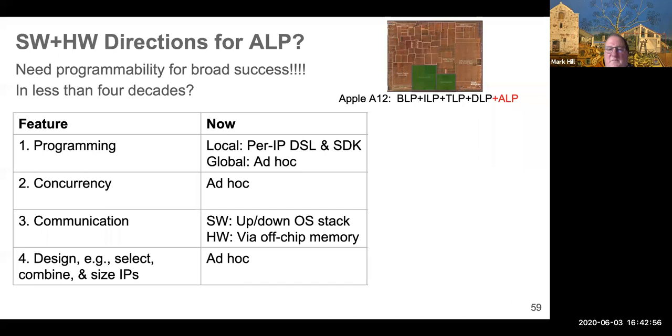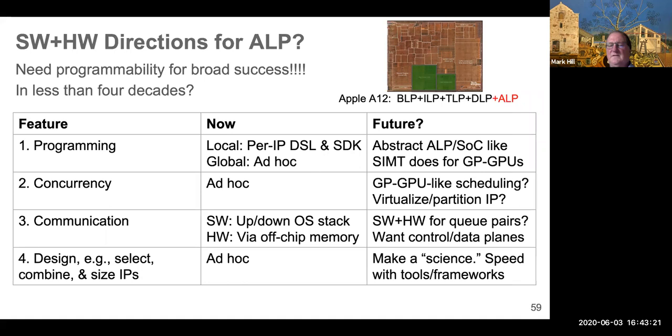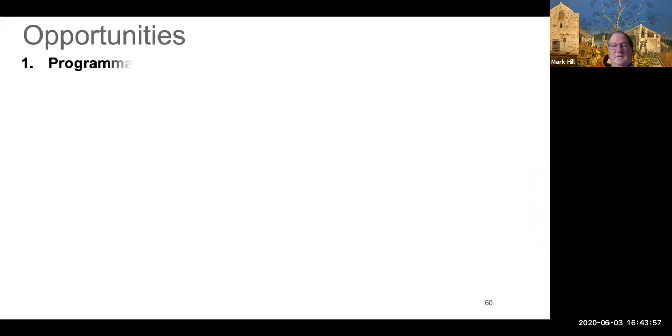So can we do a similar thing for accelerator level parallelism? Because right now what we have is programming, we got per IP special domain specific languages and the software development kits and global is totally ad hoc. Concurrency management, totally ad hoc. Communication, up and down the hardware stack. Even if you propose some fancy hardware queue between two accelerators, how exactly do the two drivers invoke that? It's not trivial. And designing is very difficult. So we would like to do better. We'd like to be like inspired by SIMT and have a model for the whole chip. We'd like to have perhaps assistance in scheduling. CPUs, for example, there's no hardware assistance for scheduling beyond an interrupt. Whereas GPUs do scheduling with a symbiosis between software and low level, what looks like hardware in the GPU. Should communication be done with caches, queue pairs? Should we separate control and data planes? I don't have the answers, but I think we want to make a science out of this if we're going to make it more generally applicable.